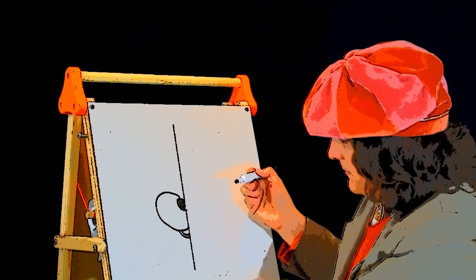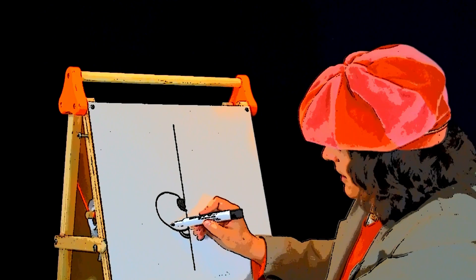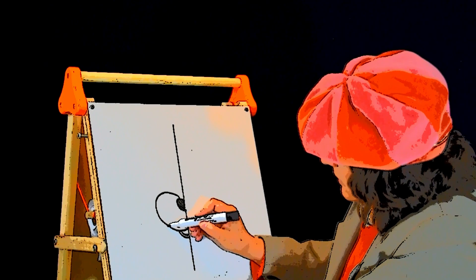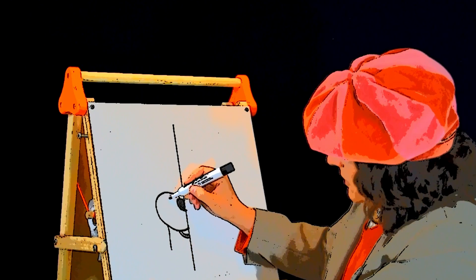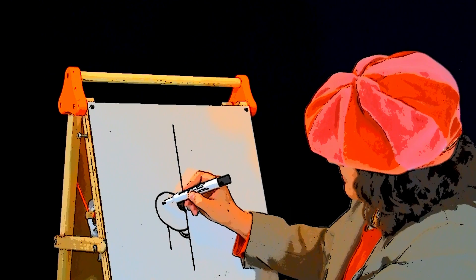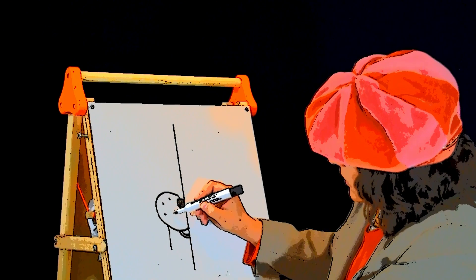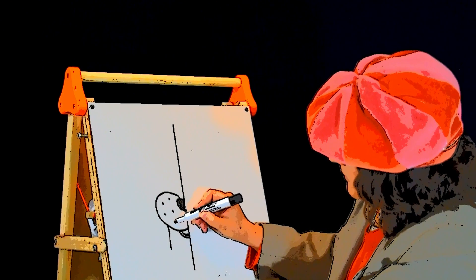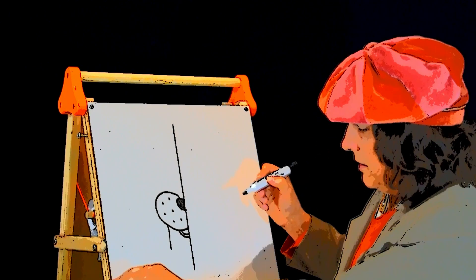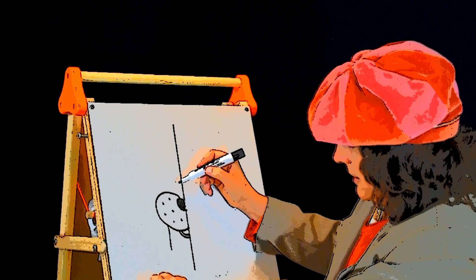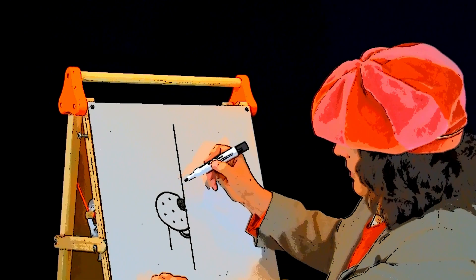Those are like the lips. And over here, coming out of this cheek, we have a vertical line. On this cheek we are going to put a few dots, just small ones.